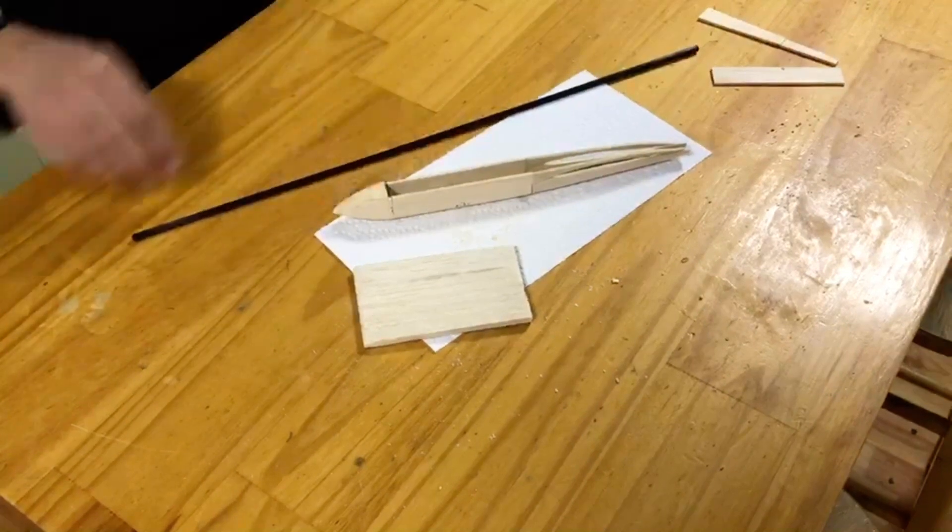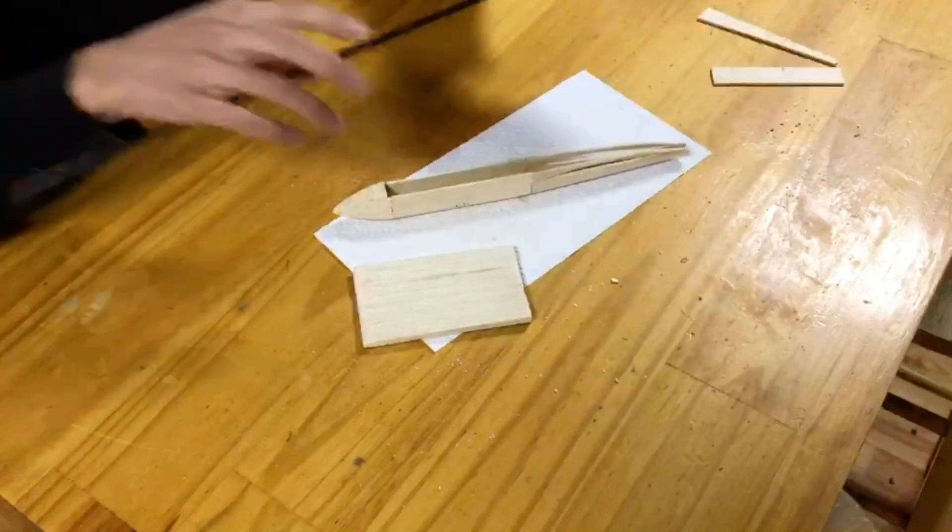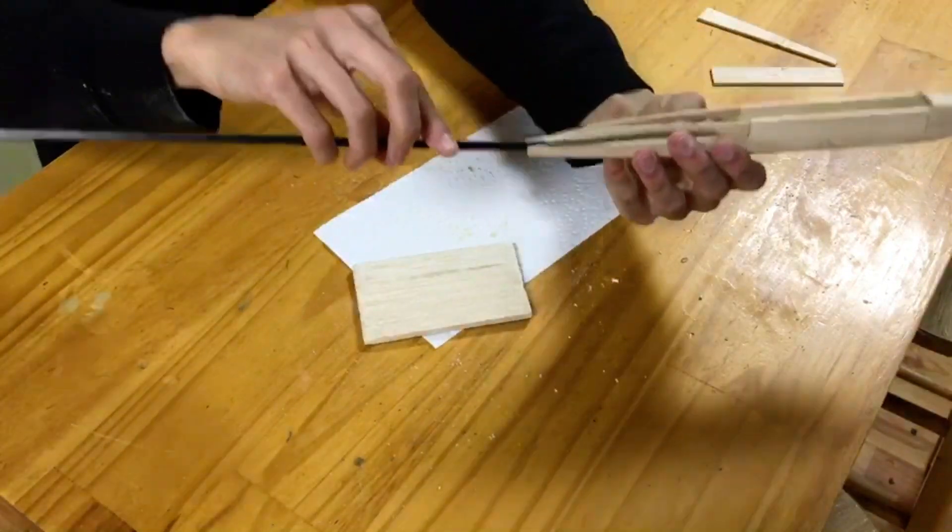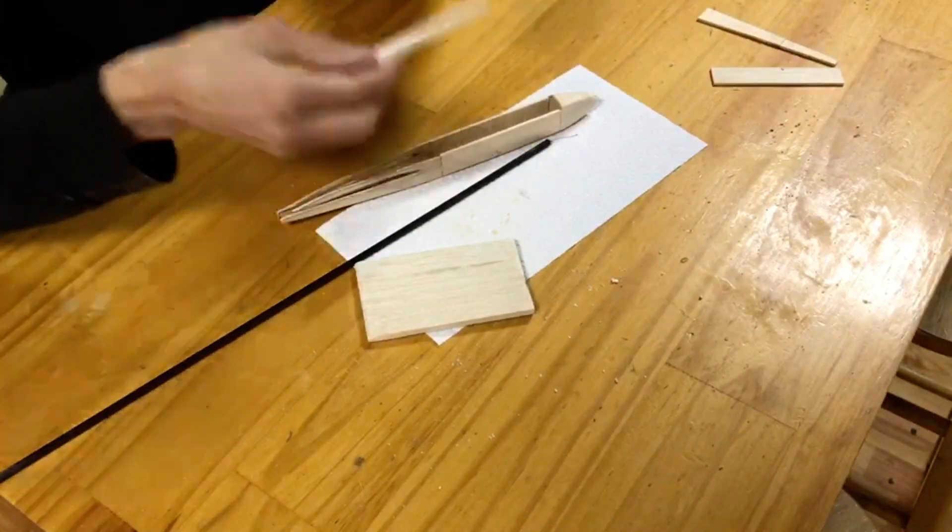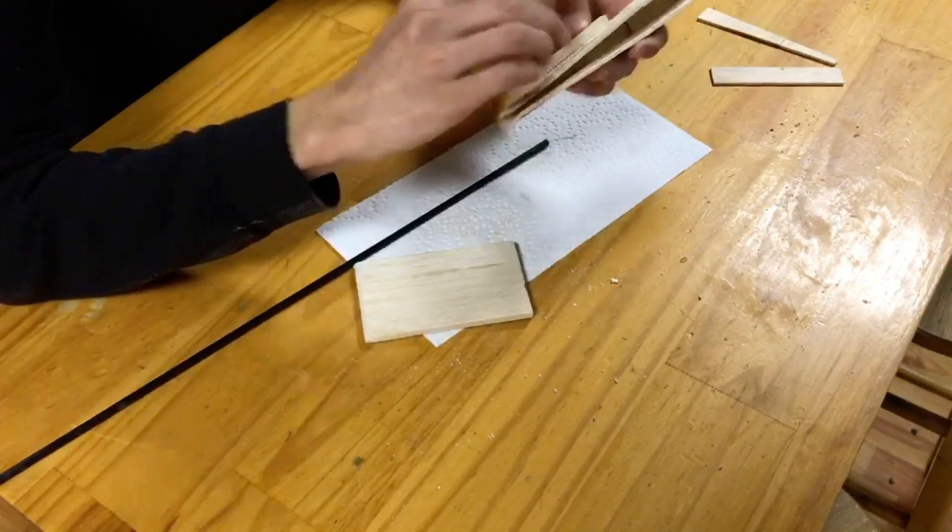For this next step, you'll need a carbon fiber tube, such as the one I have here, to use for the tail boom. You'll first want to check to make sure that the tail boom fits the aperture that you've left at the end of your fuselage. As you can see, mine fits pretty nicely here. But of course, the angle is going to be all wrong, so you'll need something to remedy that.